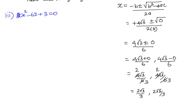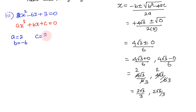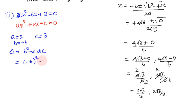Third equation: 2x² - 6x + 3 = 0. Comparing with ax² + bx + c = 0, we get a = 2, b = -6, c = 3. Finding the discriminant: Δ = b² - 4ac = (-6)² - 4 × 2 × 3 = 36 - 24.